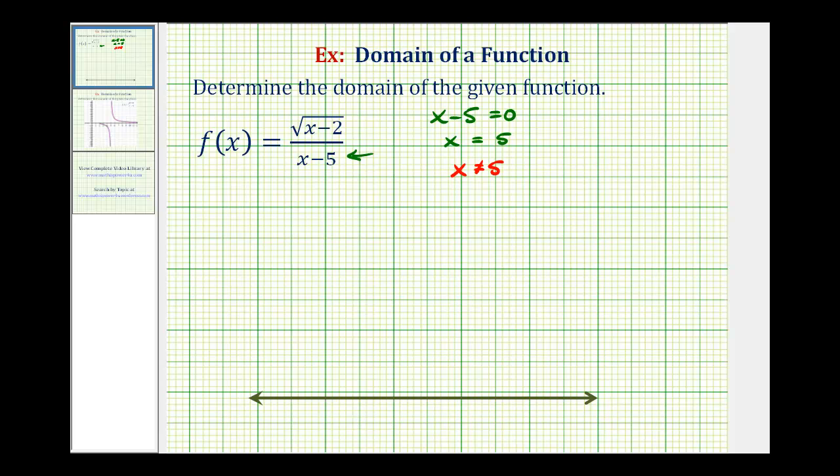Now let's consider the numerator. In order for the numerator to be a real number, the number underneath the square root cannot be negative, meaning it must be greater than or equal to zero. So the next restriction is x minus two must be greater than or equal to zero, in order for the numerator to be a real number. If we solve this for x, we have x is greater than or equal to positive two. This is the second restriction on our domain.